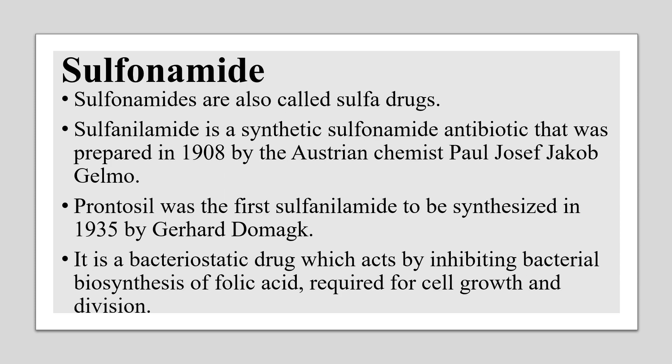The anti-metabolite we are going to talk about today is sulfonamide. Sulfonamides are also called sulfa drugs. Sulfanilamide is one of the sulfa drugs — it is a synthetic sulfonamide antibiotic, prepared in 1908 by the Austrian chemist Paul Joseph Jakob Gelmo. The first sulfonamide to be synthesized was Prontosil, synthesized in 1935 by Gerhard Domagk, a German pathologist and bacteriologist. Sulfanilamide is a bacteriostatic drug that inhibits bacterial biosynthesis of folic acid required for cell growth and division.